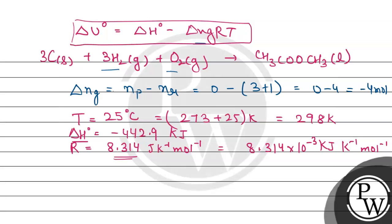We have all the values which we will put in the equation. Delta U° that we have to find equals delta H° minus 442.9 kJ, minus delta Ng which is -4, times R value 8.314 × 10^-3 kJ per Kelvin per mole, times temperature which is 298 Kelvin.